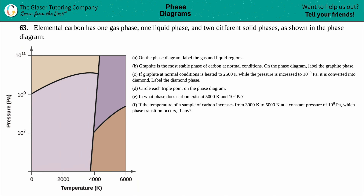Number 63: elemental carbon has one gas phase, one liquid phase, and two different solid phases, as shown in the phase diagram. We have parts a through f, so let's take it one letter at a time. Starting with letter a: label the gas and the liquid regions on the phase diagram.